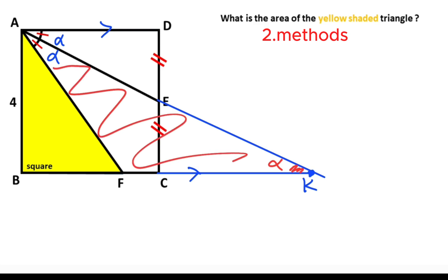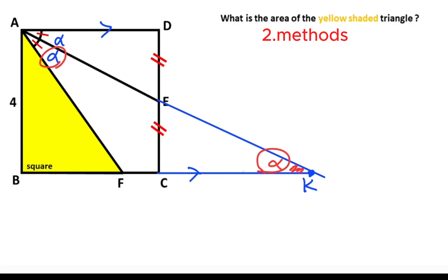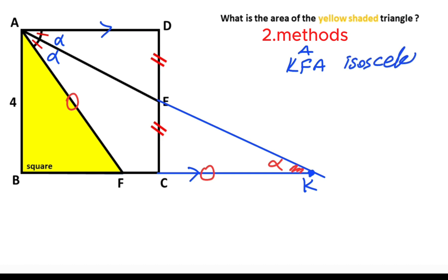If you focus on triangle AFK, notice that the triangle has the same base angles, which means triangle AFK is an isosceles triangle. Therefore the length of AF must equal the length of FK.